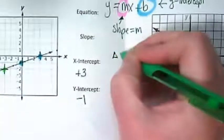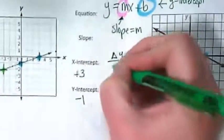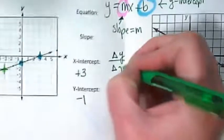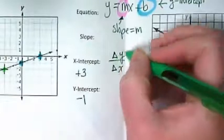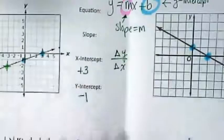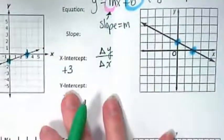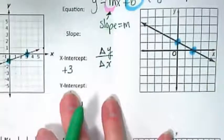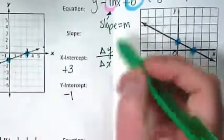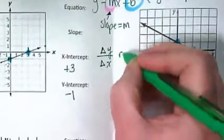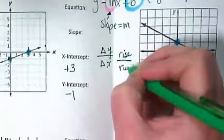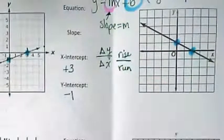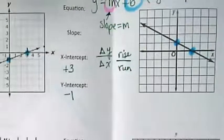We like to write change in y over change in x using these deltas. That triangle means change. I like to use them because we end up really drawing a triangle on the graph to find our rise and run, and the change triangle reminds me of that. But remember, we're doing rise on the top, run underneath, and it will look like a fraction most often.